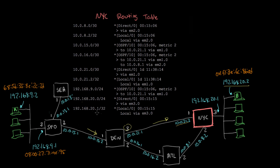Looking at New York's routing table, we see the 192.168.20.0/24 prefix listed as directly connected via interface EM3, with no next hop. That means this address is on the same Ethernet network as that interface, so New York goes ahead and does an ARP for 192.168.20.2 — the same ARP process we saw before — and then delivers the Ethernet frame.